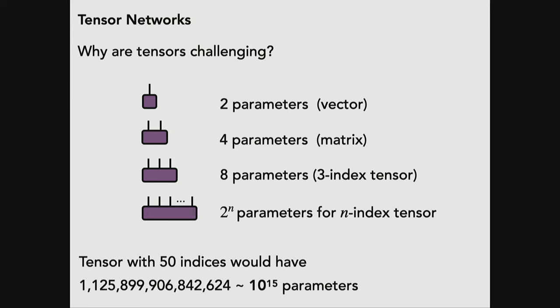Why are tensors challenging to work with directly? Why do we need tensor networks? It's called the curse of dimensionality in math, and in physics we call it the many-body problem: parameters grow too fast. With two-valued indices, a vector has 2 parameters, a matrix has 4, a three-index tensor has 8 — but with n indices you have 2^n parameters. At 50 indices that's about 10^15 numbers. We can store tensors up to maybe 20 indices, but after that it's really impossible.